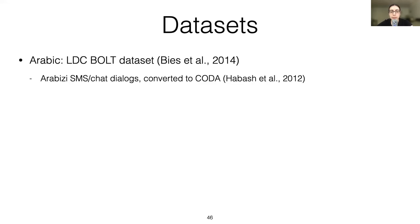For Arabic, we used the LDC-BOLT dataset, which consists of SMS and chat dialogues between Egyptian Arabic speakers written in Romanized Arabic, or so-called Arabizi. The messages were semi-automatically converted to Arabic script, specifically to a standard called Conventional Orthography for Dialectal Arabic, because dialectal Arabic by itself doesn't have a standardized orthography.